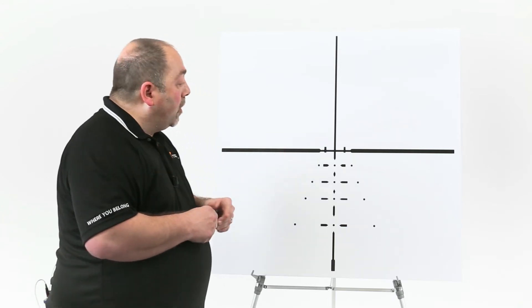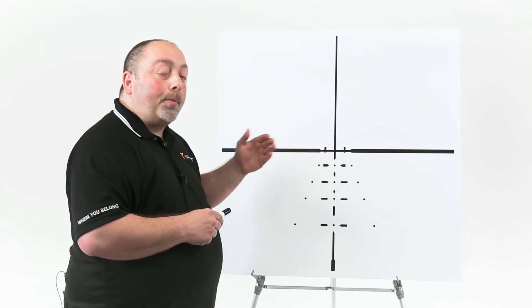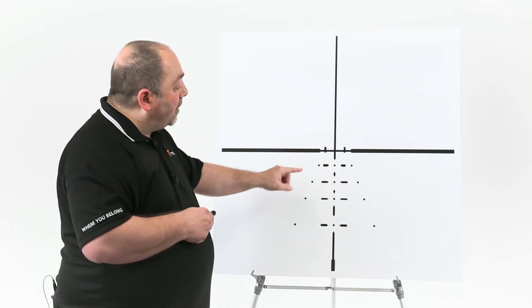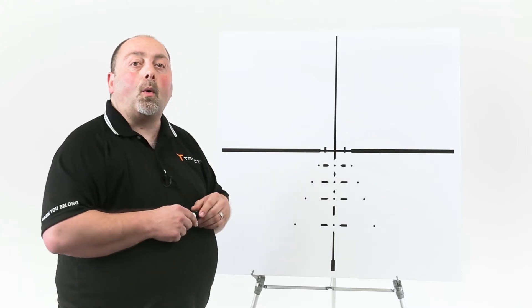But that's not all there is. We actually created a pointed post system. You can see that the posts of the reticle are pointed. That allows you to bracket the target without covering it up.